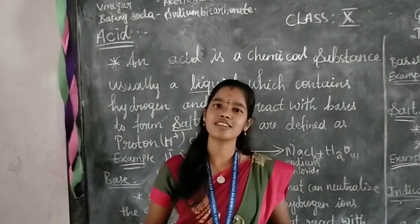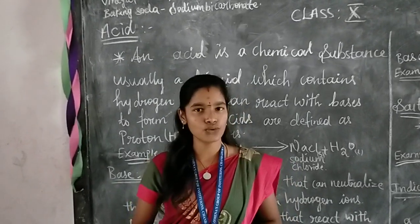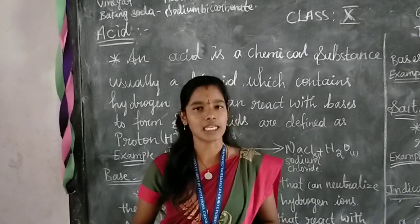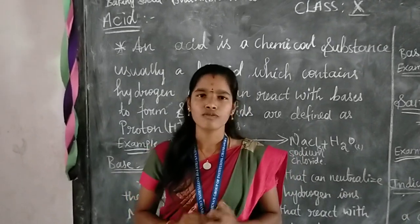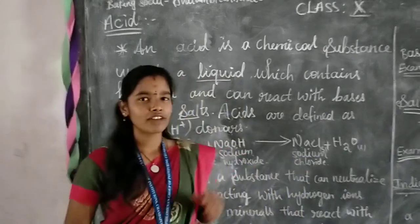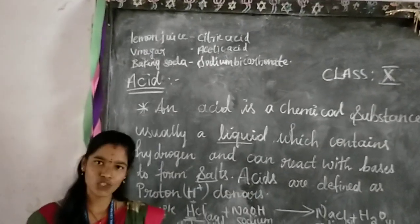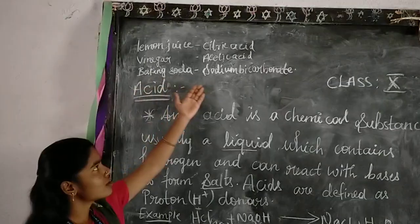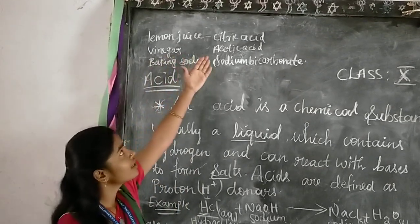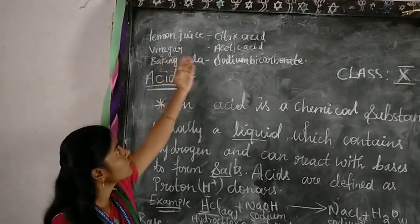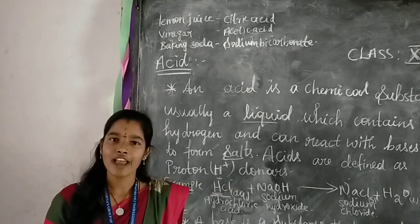Dear students, you have learned in the previous classes that sour and bitter tastes of food are due to acids and bases respectively present in lemon. If someone in the family is suffering from a problem of acidity after overeating, which of the following will you suggest as a remedy: lemon juice, vinegar, or baking soda? Of course, we will suggest baking soda, which is nothing but sodium bicarbonate, because lemon juice contains citric acid and vinegar also contains acetic acid. Baking soda is a base — it will neutralize and nullify the effect of acidity.